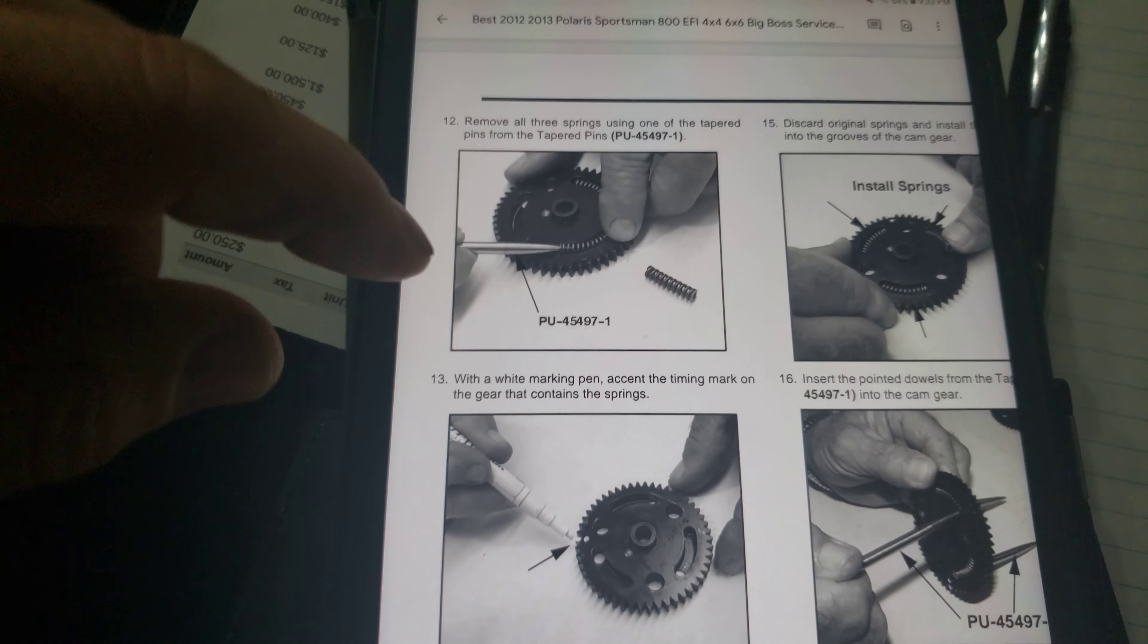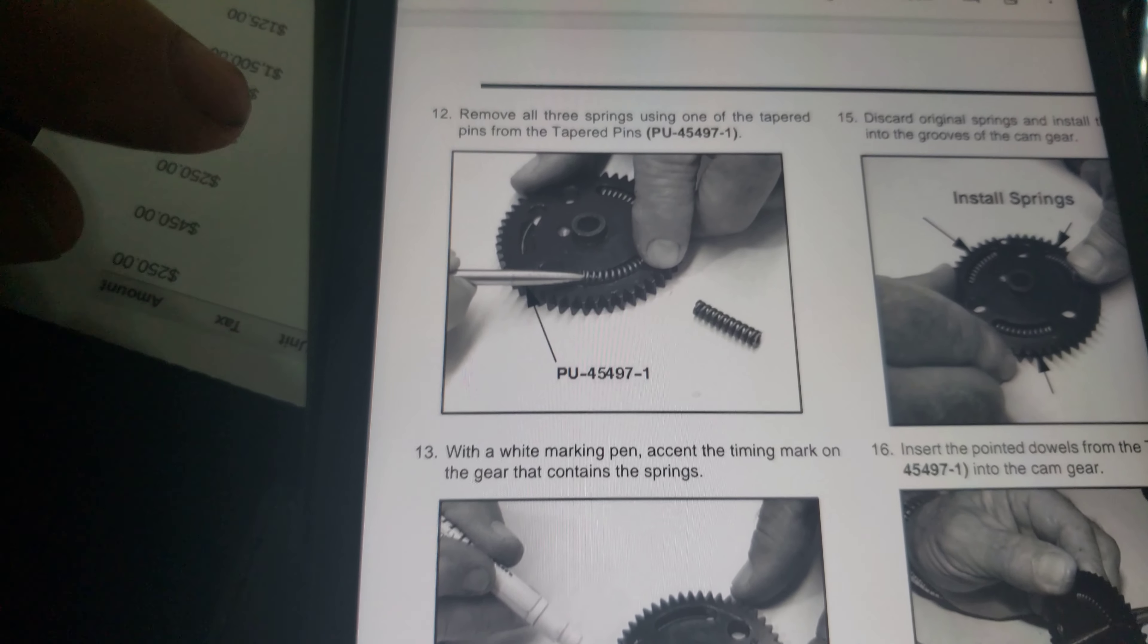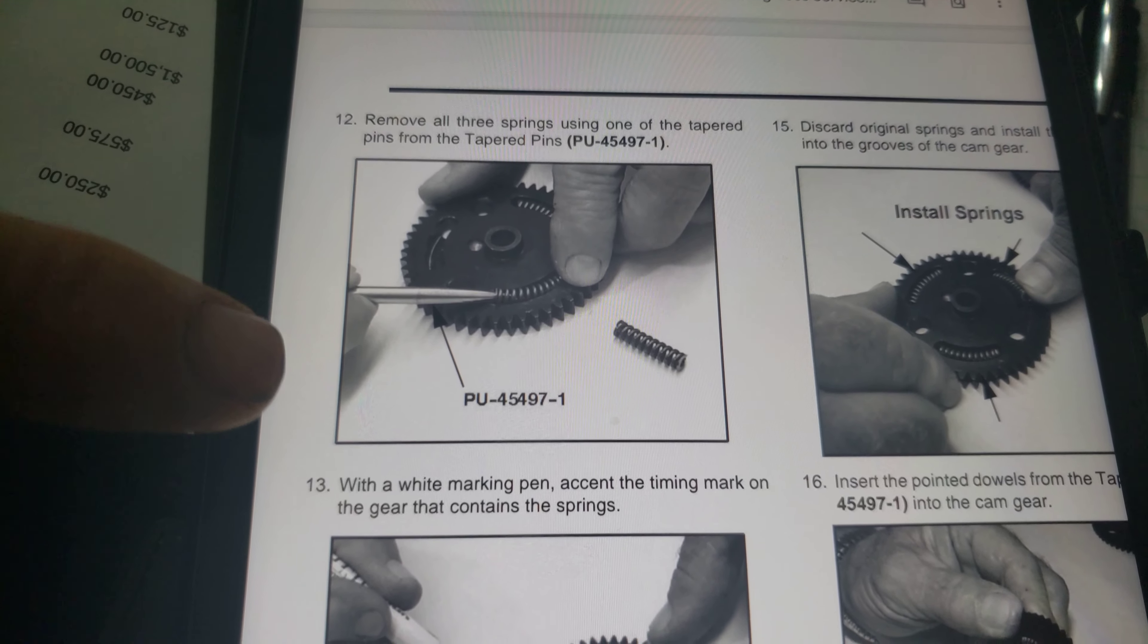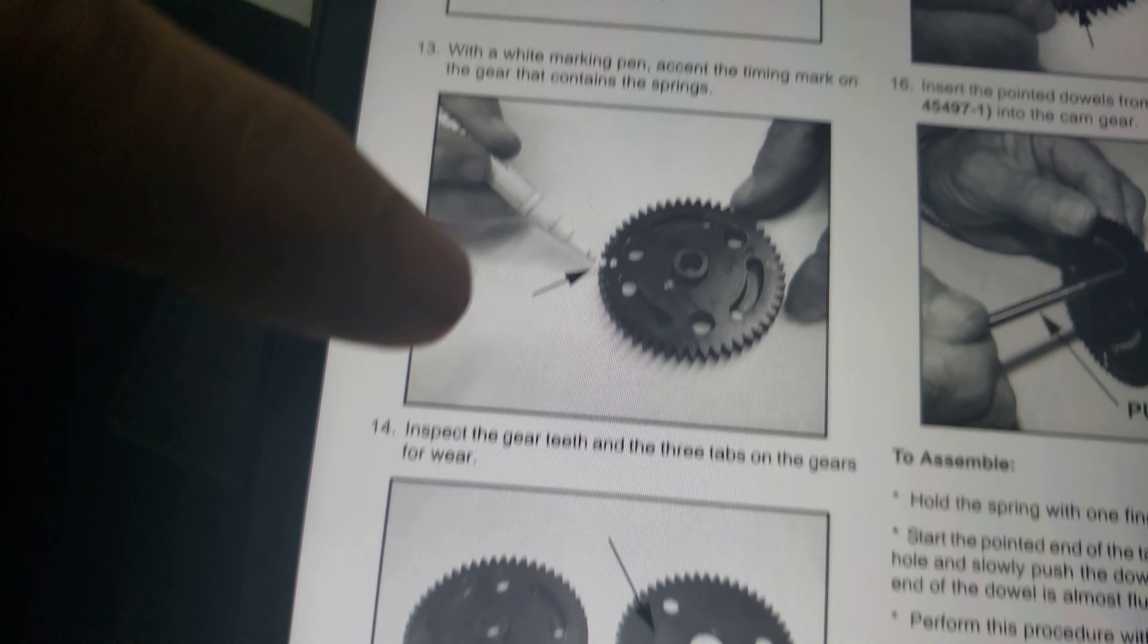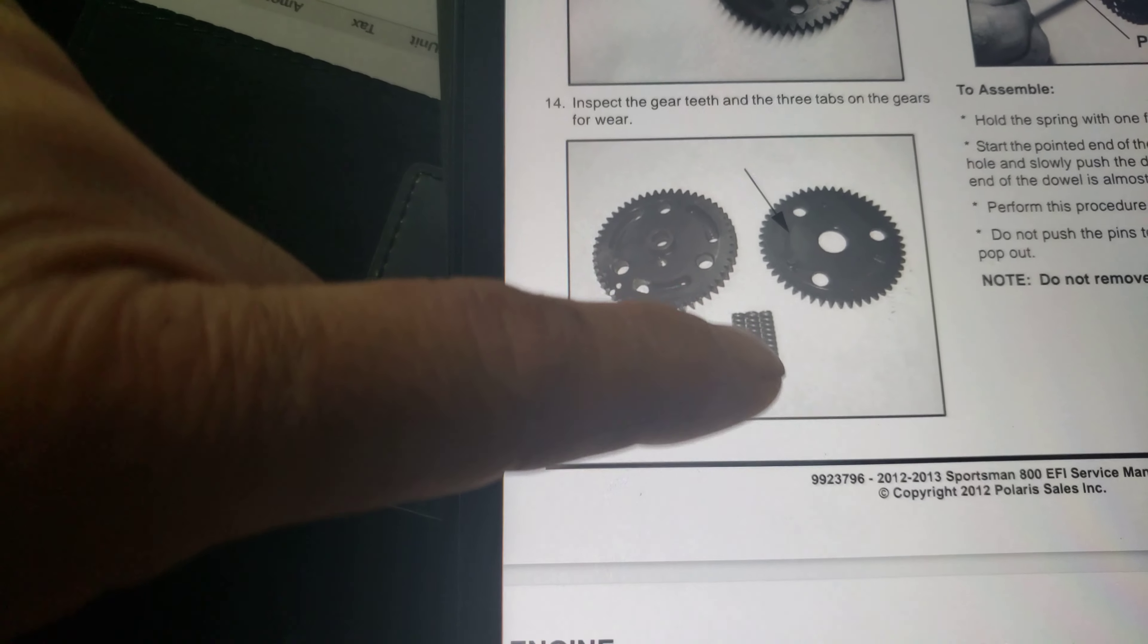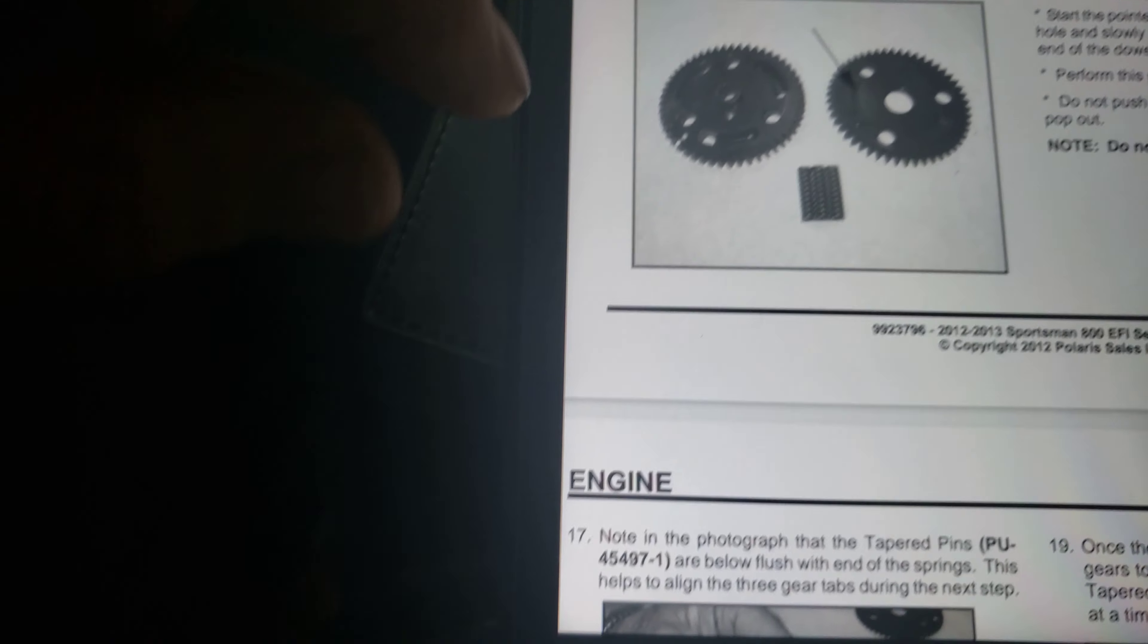Okay friends, here was the problem. On this Polaris Sportsman 800, this is for the cam. If you can see this here, there's two different ones.